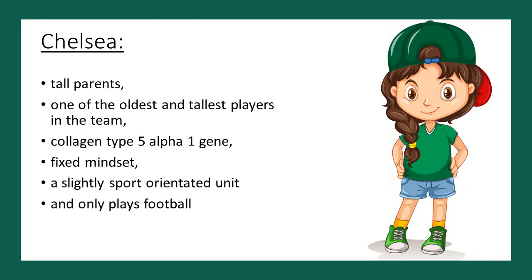Of course, the same could happen the other way around. Meet Chelsea! She is one of the oldest and tallest players on the team and has very tall parents. However, she has the collagen type 5 alpha 1 gene, a fixed mindset, a slightly sport-orientated upbringing, and only plays football. The coach might put Chelsea in the upper bracket, which could potentially be dangerous, as she is more likely to suffer an Achilles tendon or ACL injury if she trains too hard. It would actually be better and safer for Chelsea to work in the lower bracket, to help her gradually increase the amount of pressure she can put on her Achilles tendon and ACL to prevent a serious injury.